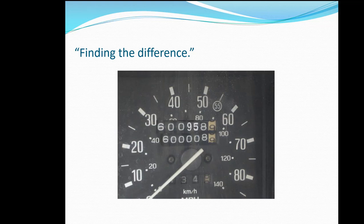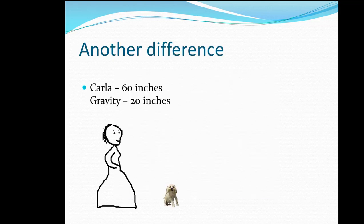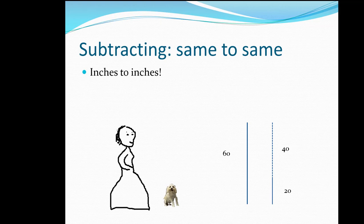Another difference: Carla is 60 inches tall, Gravity is 20 inches tall. How much taller is Carla than her adorable dog? Even though we're talking about Carla and a dog, we're comparing inches to inches. Subtract same from same. She is 40 inches taller.